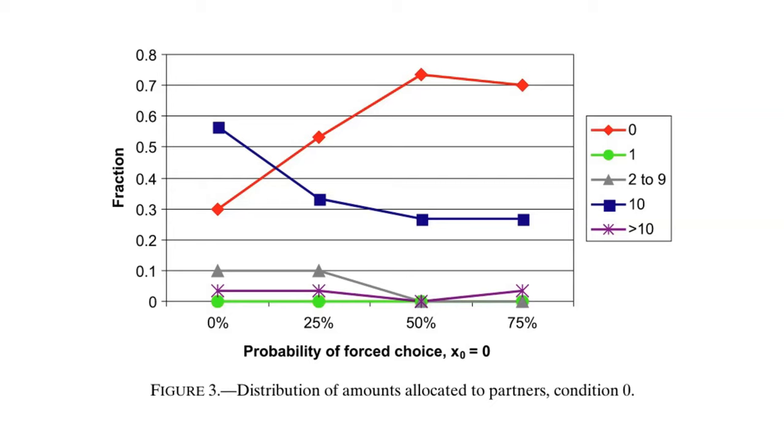For P of 0.5 or 0.75, and a computer allocation of 0 to the receiver, most dictators will offer 0. If the receiver receives a low allocation, the receiver will likely infer it is due to the computer's decision. They will not blame the dictator.